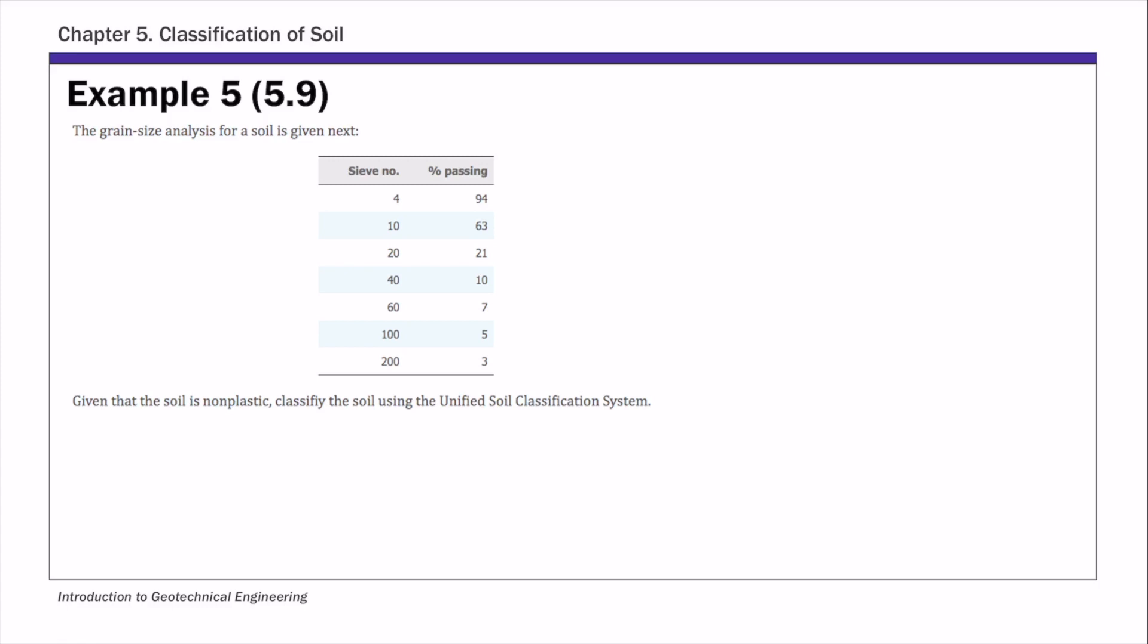This is example 5 of chapter 5, soil classification. We are given grain size analysis data and we also know that the soil is non-plastic. So that tells us something about the fine contents - it's going to be silt, and we're asked to classify the soil using USCS.